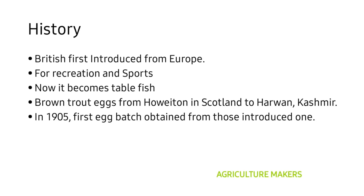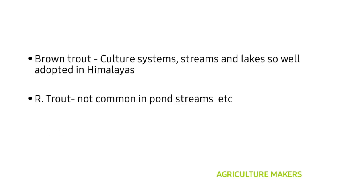The British first introduced brown trout eggs from Hawaii in Scotland to Harwan in Kashmir in 1905. The first egg batch was obtained from those introduced eggs in Harwan, Kashmir. Brown trout are cultured in streams and lakes and are well adapted to Himalayan regions. However, rainbow trout is somewhat difficult to culture in ponds and streams when compared to brown trout.